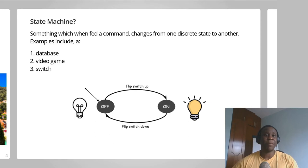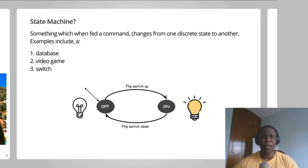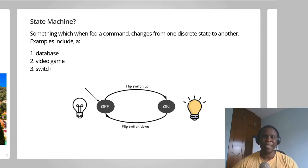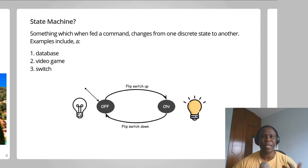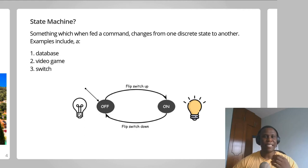Another example of a state machine is a video game. When you feed a video game commands through an input device — let's say a gamepad — the video game changes from a state where a character is standing to a state where the character is seated. A simpler example is a light bulb. When you flip the light bulb switch up, the bulb transitions from a state where it was off to a state where it is on. When you flip the switch down, the light bulb transitions from on to off. The act of flipping the switch is a command, and the light bulb whose state is affected by commands is a state machine.